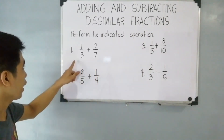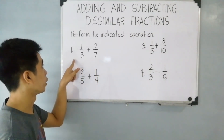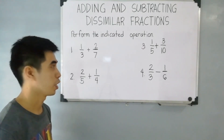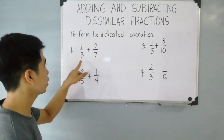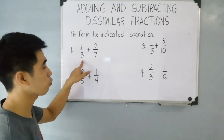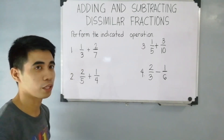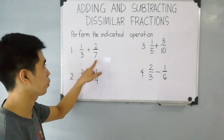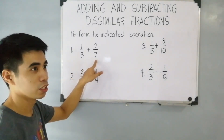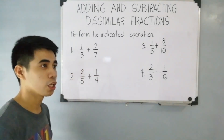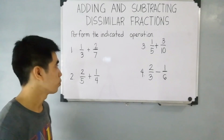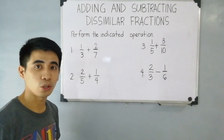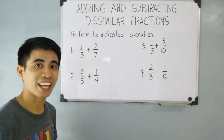For item number 1, 1 third plus 2 over 7. As you can see, these two fractions have different denominators — this one is 3 and this one is 7. Therefore, we will use the least common denominator, or the LCD.